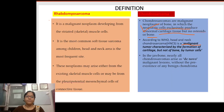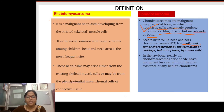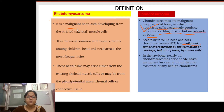Hi friends, myself Dr. Khusbu, and today I am presenting a very important topic regarding the basic differences between rhabdomyosarcoma and chondrosarcoma. Rhabdomyosarcoma is a malignant neoplasm developing from the striated skeletal muscle cells.